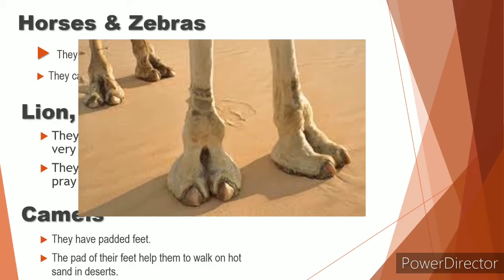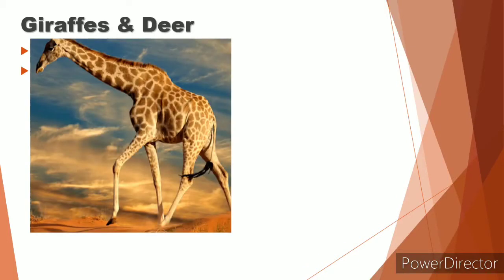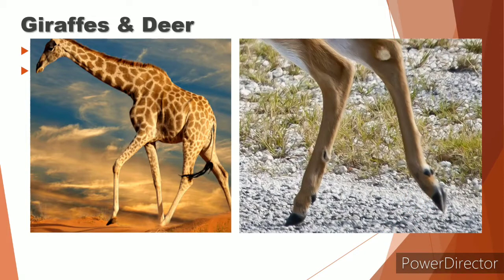Next we will move to giraffe and deer. We all know that they have long and thin legs. They can also run very fast. Giraffe is much taller than deer but their legs are almost the same. Long and thin. Perfect for running and walking.